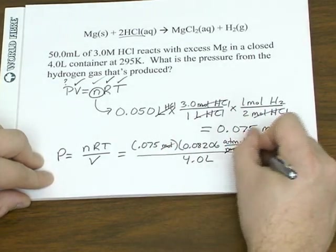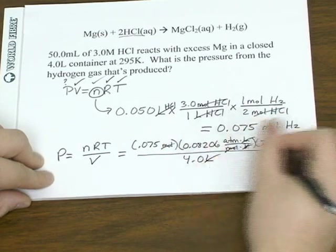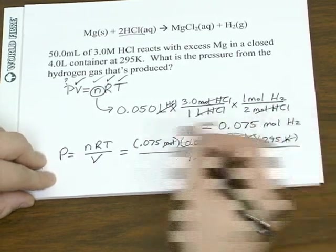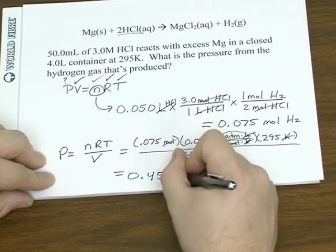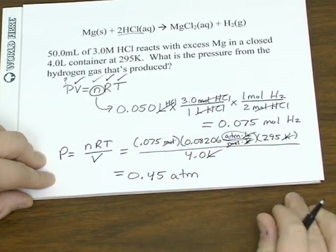Checking the units, everybody cancels out, except the unit we're looking for. So that's going to give us a pressure of 0.45 atmospheres.